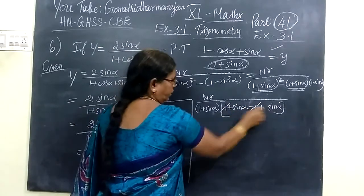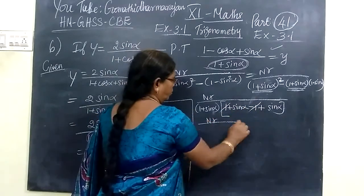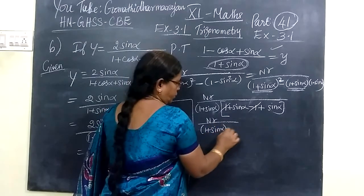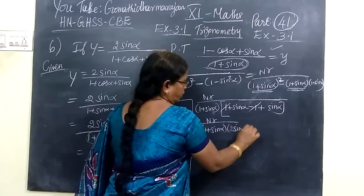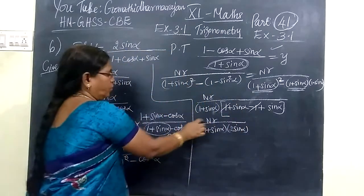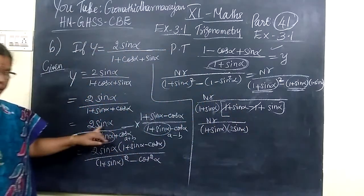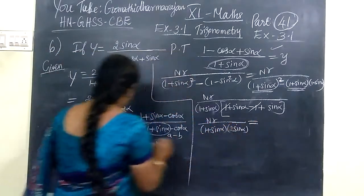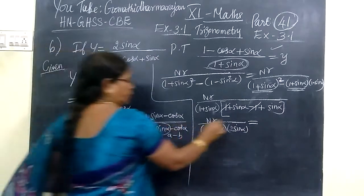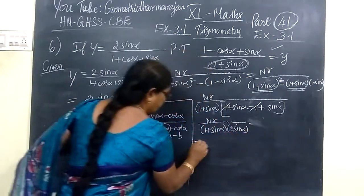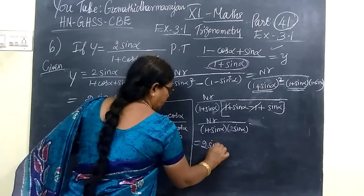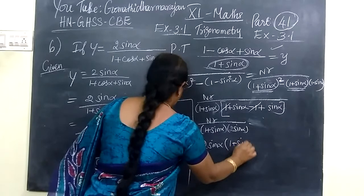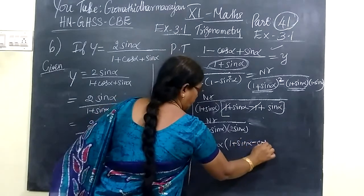This is 2 sin alpha. Numerator is 2 sin alpha. In the denominator, this will be getting cancelled in the next step. In the numerator, 2 sin alpha. And the remaining is 1 plus sin alpha minus cos alpha.